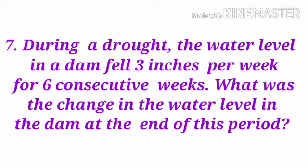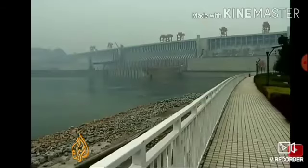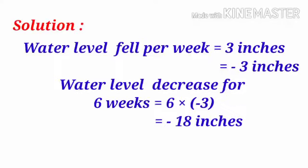During a drought, the water level in a dam fell 3 inches per week — fell represents a negative integer, so it is minus 3 inches. For 6 consecutive weeks, the change in water level is 6 into minus 3 equals minus 18 inches, which is the change in the water level at the end of this period.